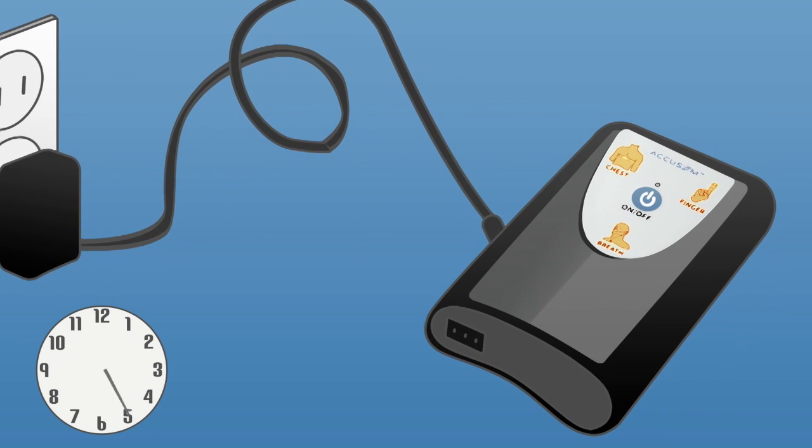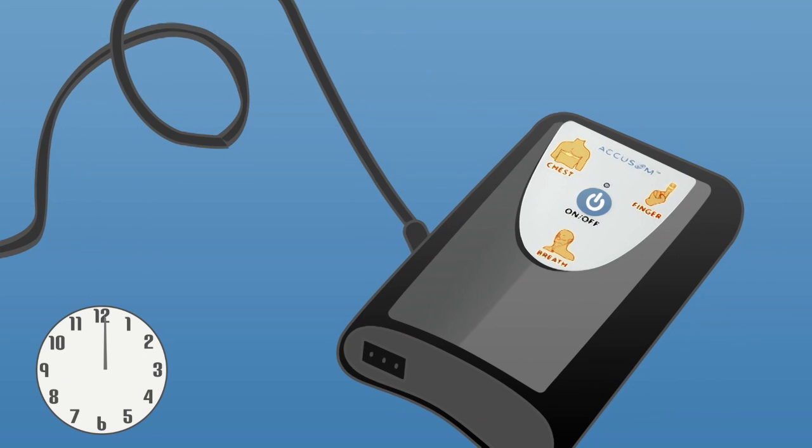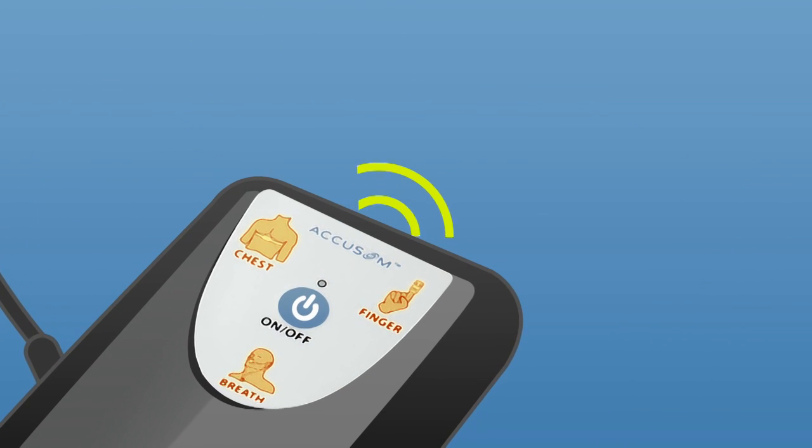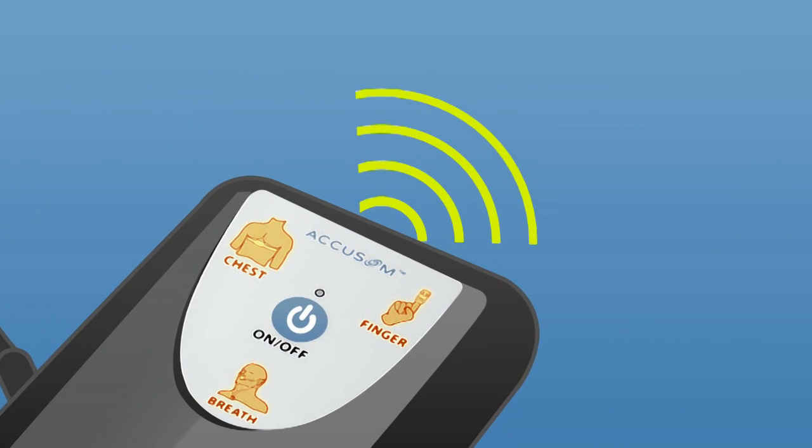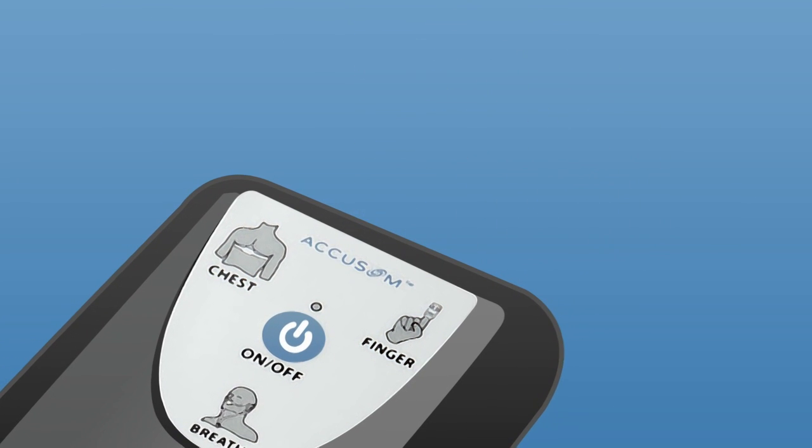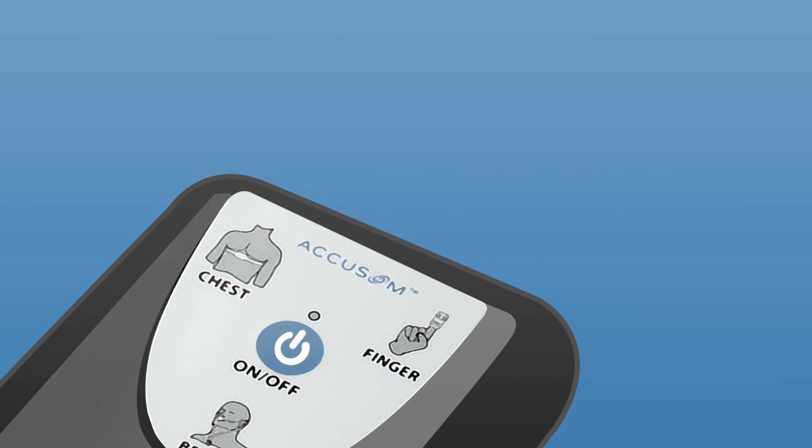Leave the device charging for at least one hour. It will show an orange light and no other indicators. During this time, your sleep test results will be transmitted to Novosum. Once fully charged, the orange light will turn off.